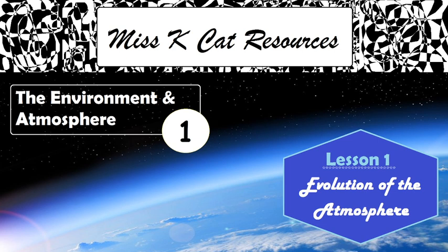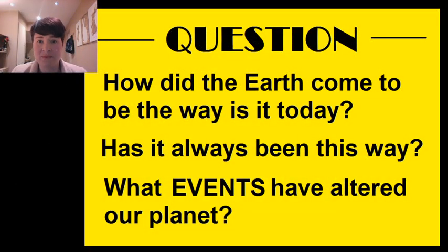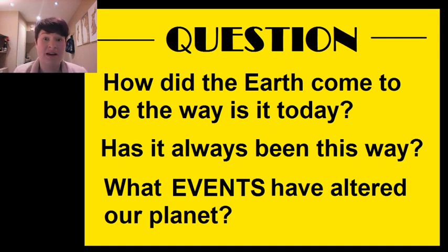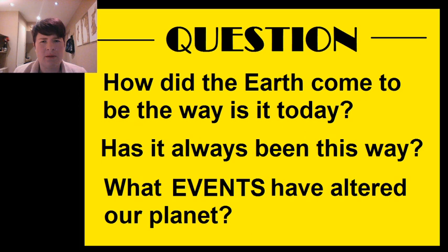If you've been engaging with the content via Edmodo or any of my other platforms, you will know there were some pre-questions set to have a think about. So let's have a little look at those now. The questions I set for you to think about were: how did the Earth come to be the way it is today? Has it always been this way? And what events have shaped our planet — whether that be the structure of the ground, the mountains, or the atmosphere itself?